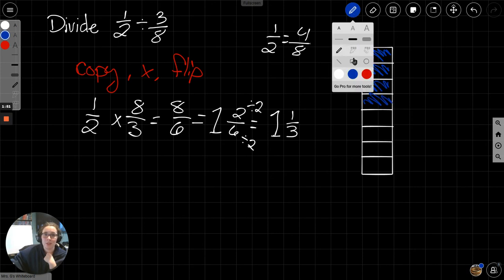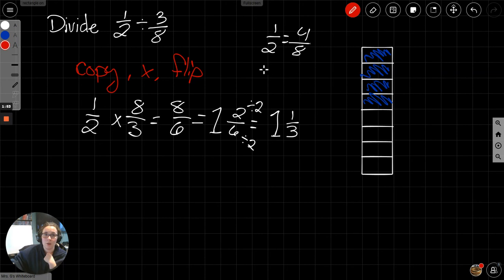Now let's chunk 3 eighths. 1 half divided by 3 eighths. So 3 eighths would look like that. The next 3 eighths is not full.